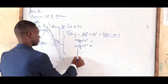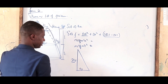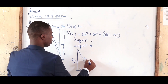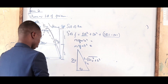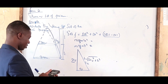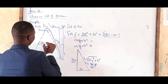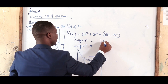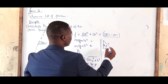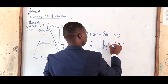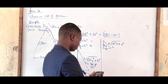To get the slant height, for the big cone with height 22.5 and radius 21, capital L = √(22.5² + 21²) = 30.8 cm. For the small cone with height 7.5 and radius 7, small l = √(7² + 7.5²) = 10.3 cm.